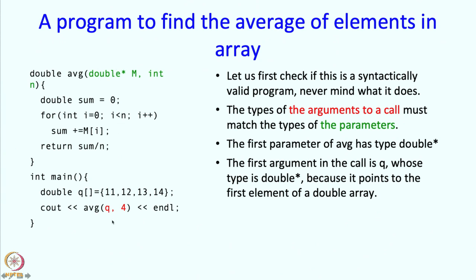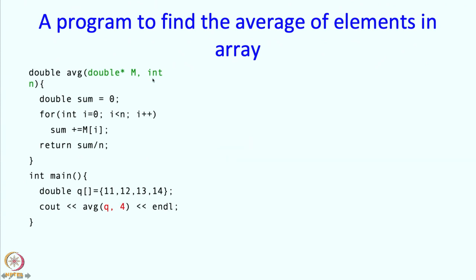The type of this is indeed the same as the type of this. So when we execute the function, the value q will indeed be copied into m. The second parameter here is type int and here also is type int, so there is absolutely no problem. Now let us see how this is going to be executed.